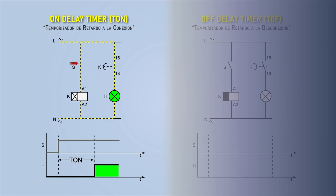If we open contact S to de-energize the coil, contact K of the timer immediately changes state and disconnects the circuit, since it only acts at the time of connection but not at disconnection.